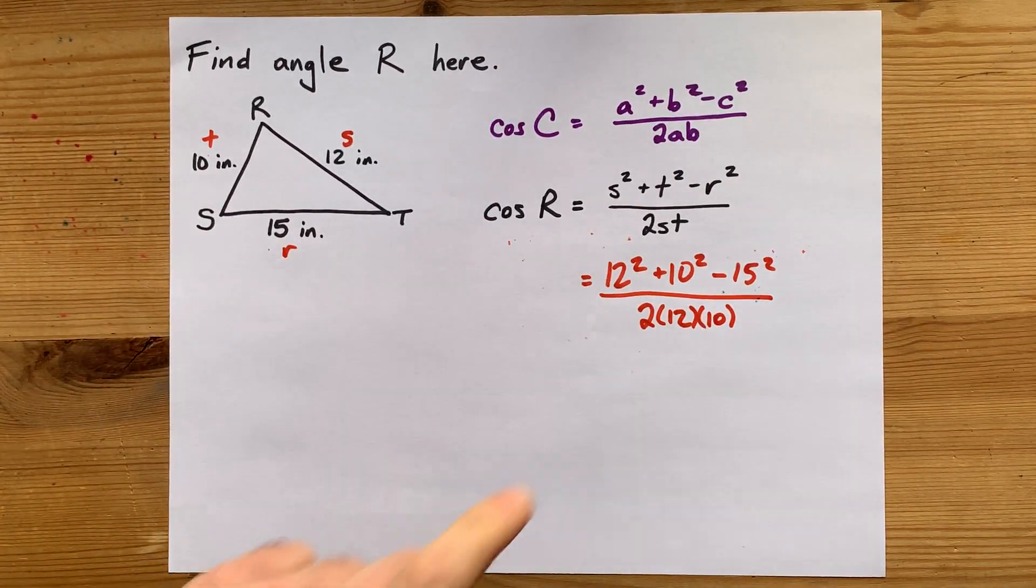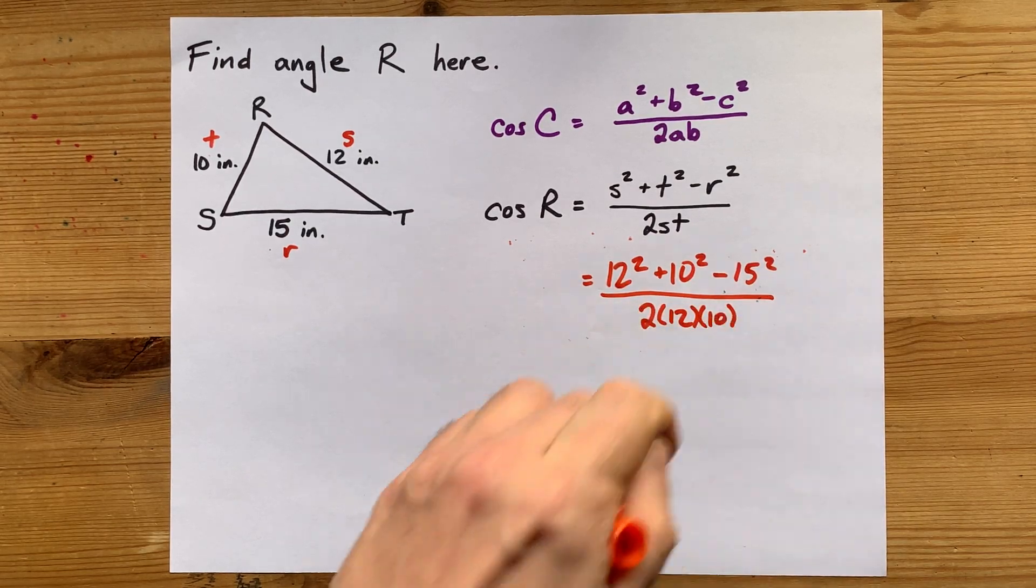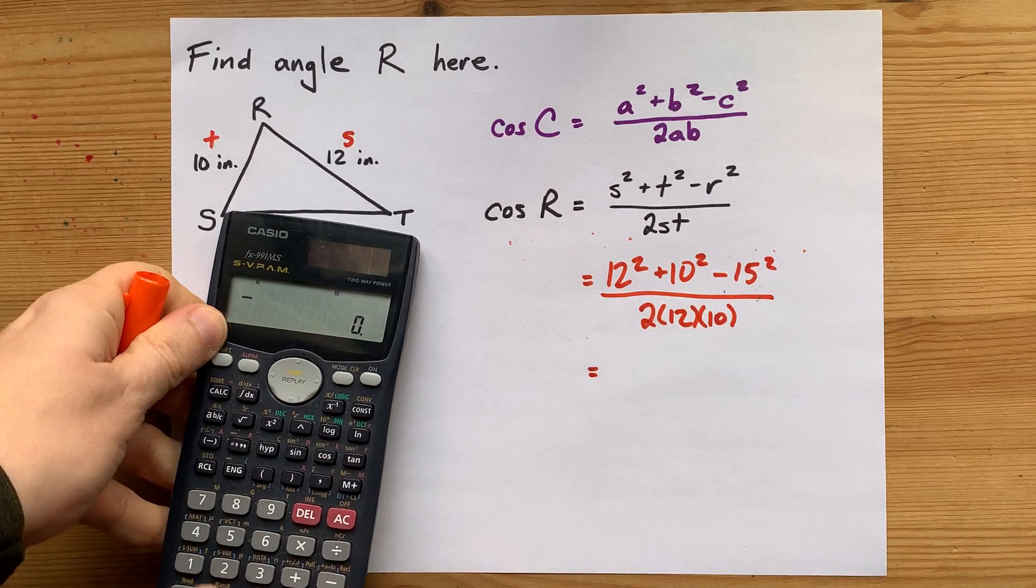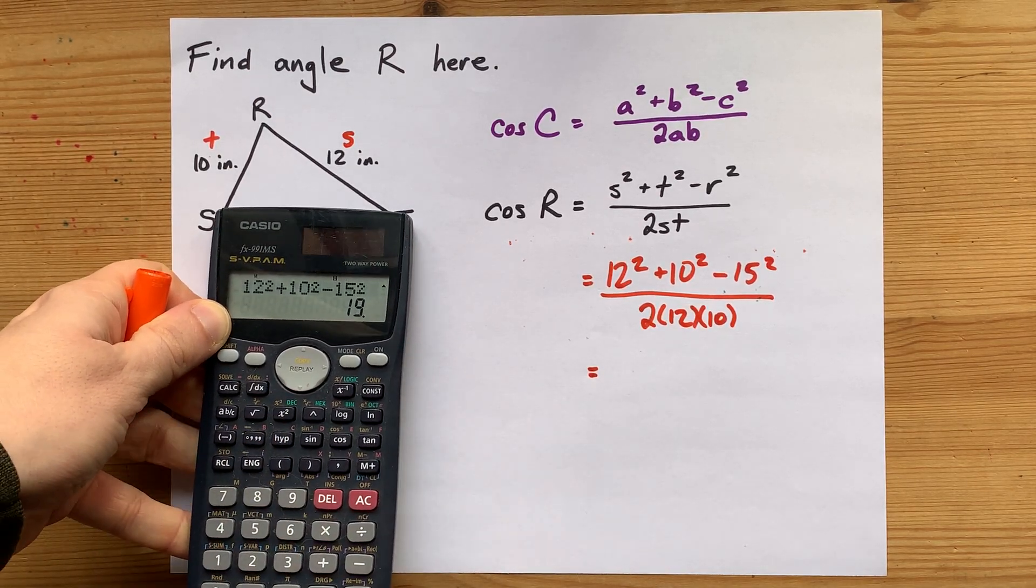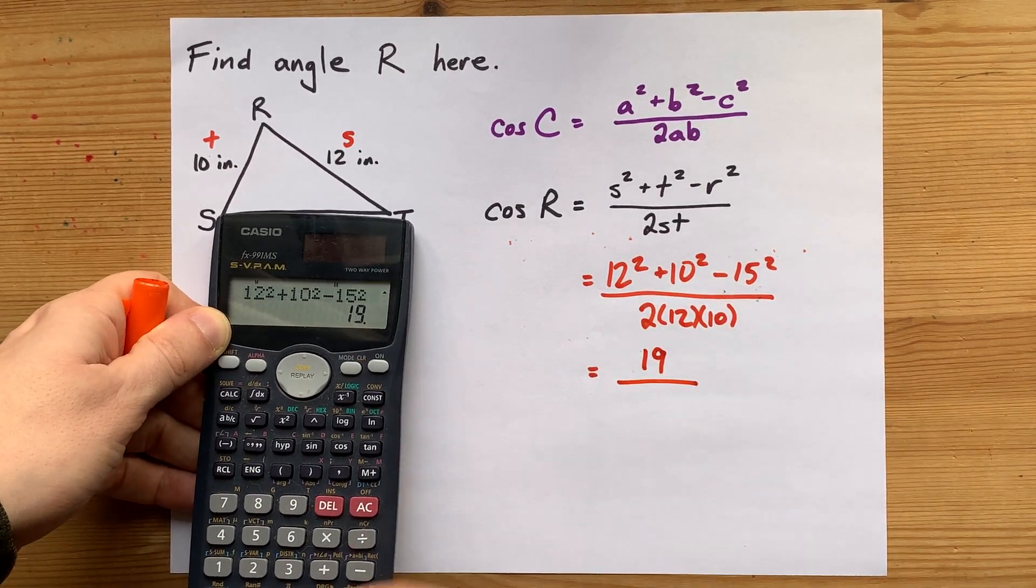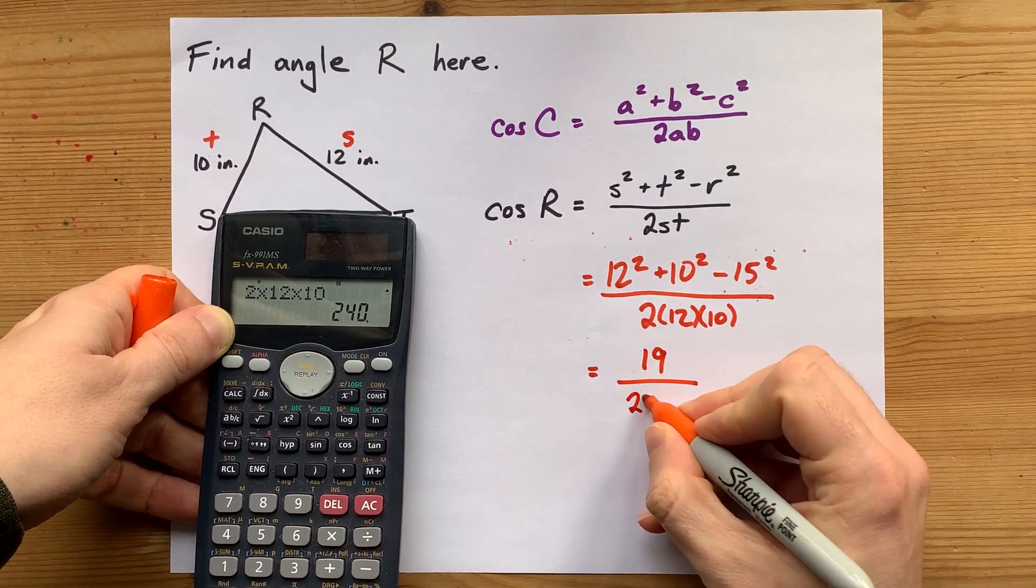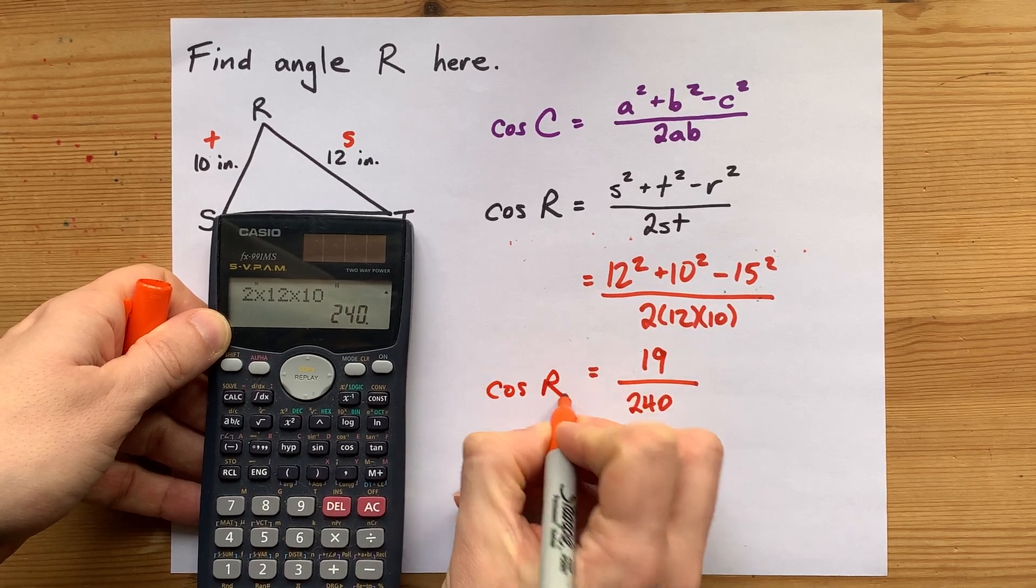Now what I want you to do here is to do the entire top on your calculator and the entire bottom and then divide. So I've got 12 squared plus 10 squared minus 15 squared. That gives me actually just 19. And on bottom, I've got 2 times 12 times 10. That's 240.